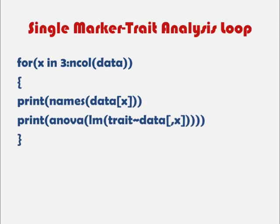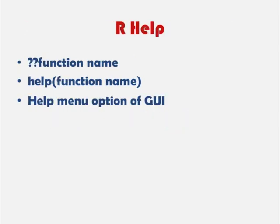And then we can write a for loop. So we have for, and then we have a sequence. So for x, from the third column to the end of the columns in our data sets. And the three is because our marker data begins in our third column. And then we have our series of expressions.